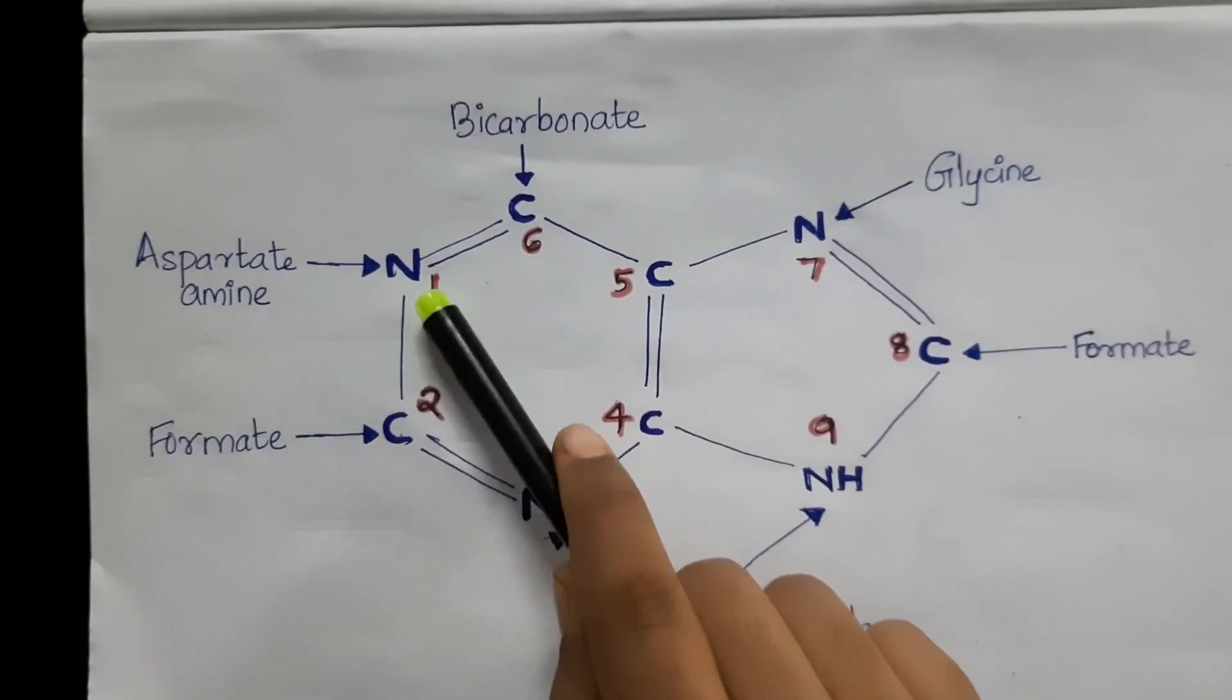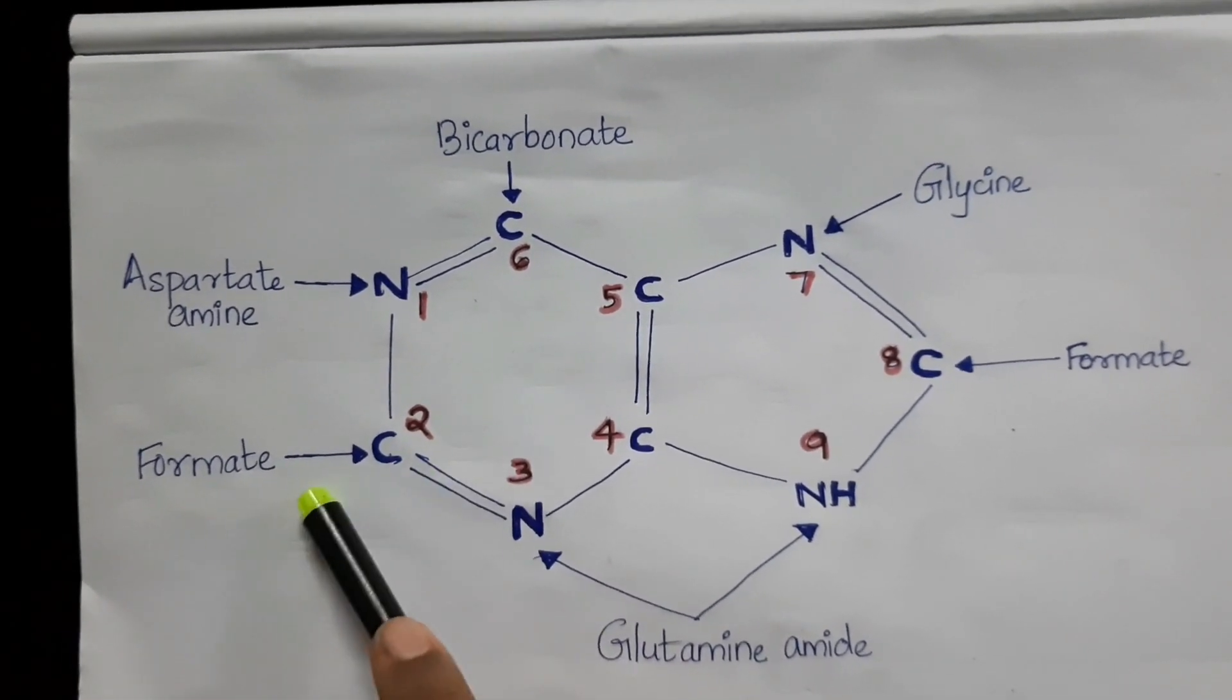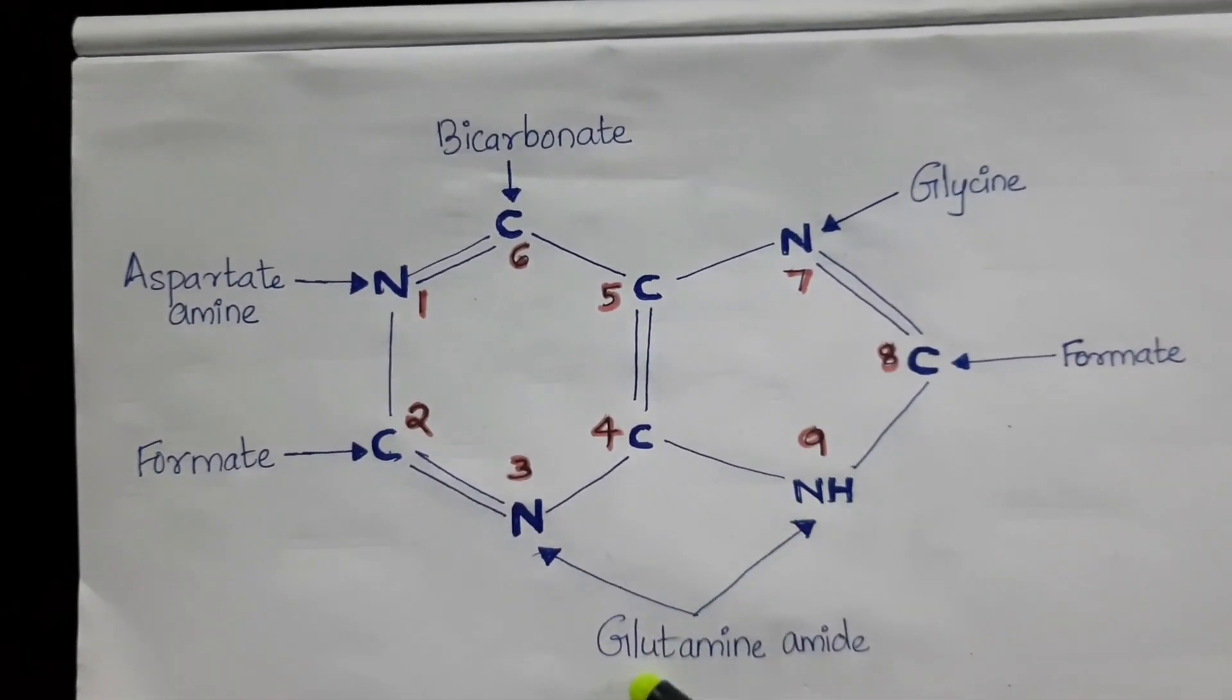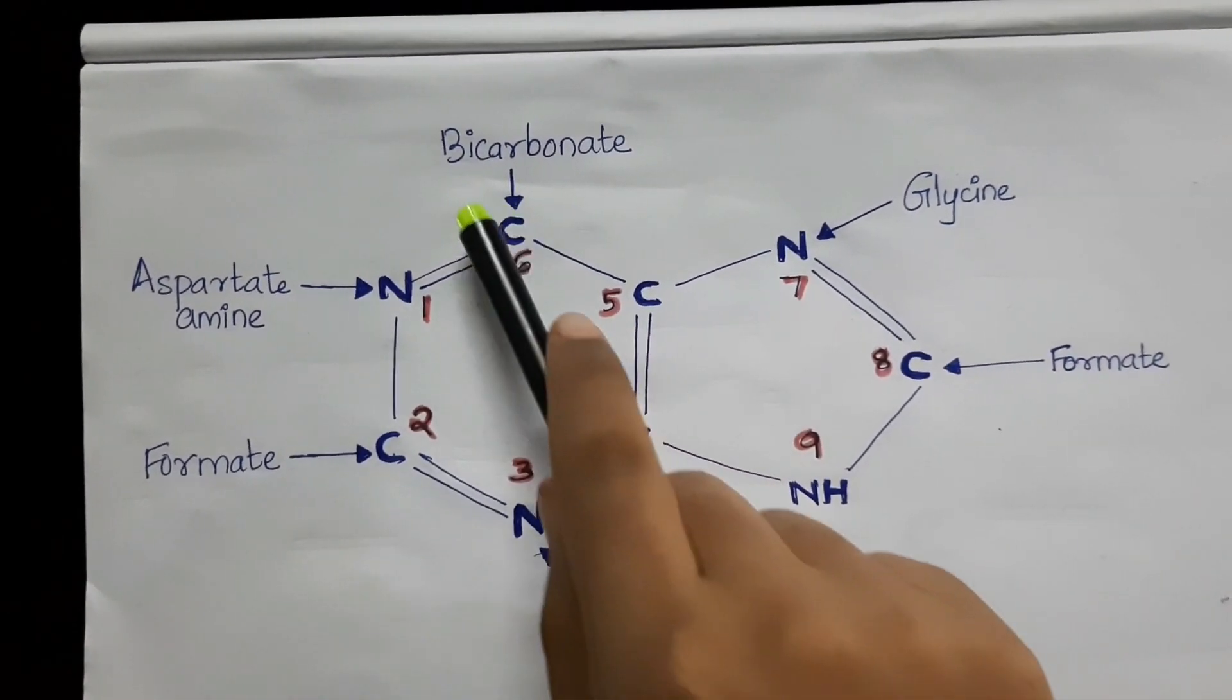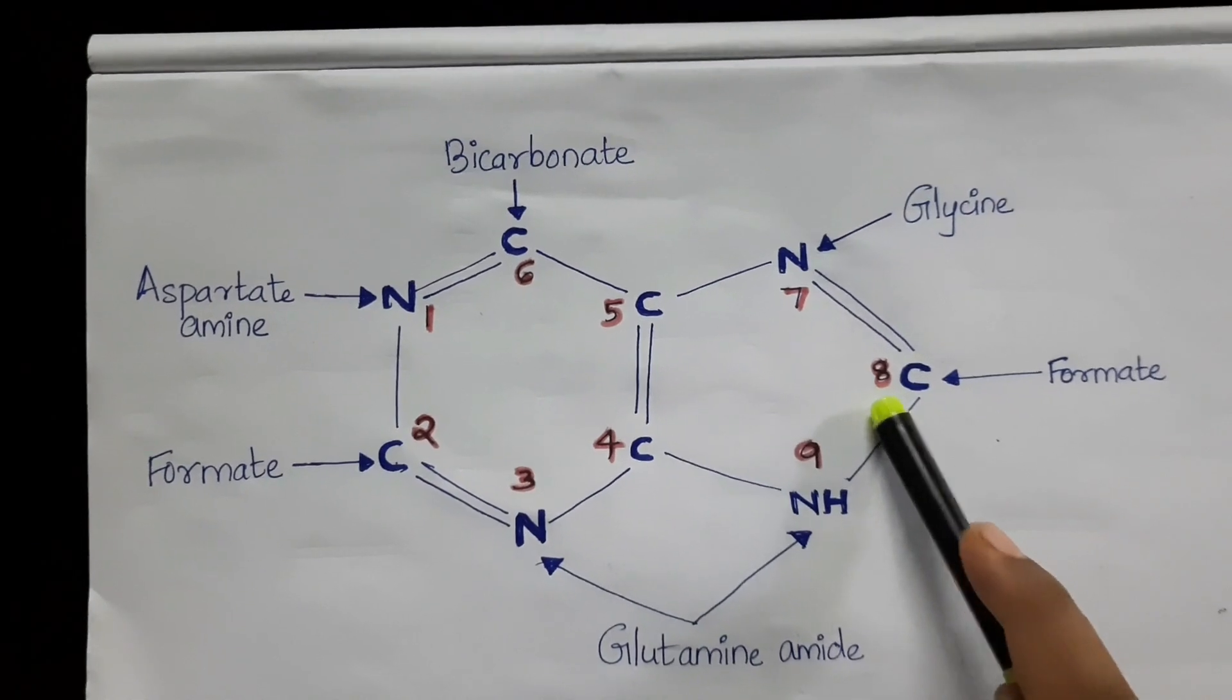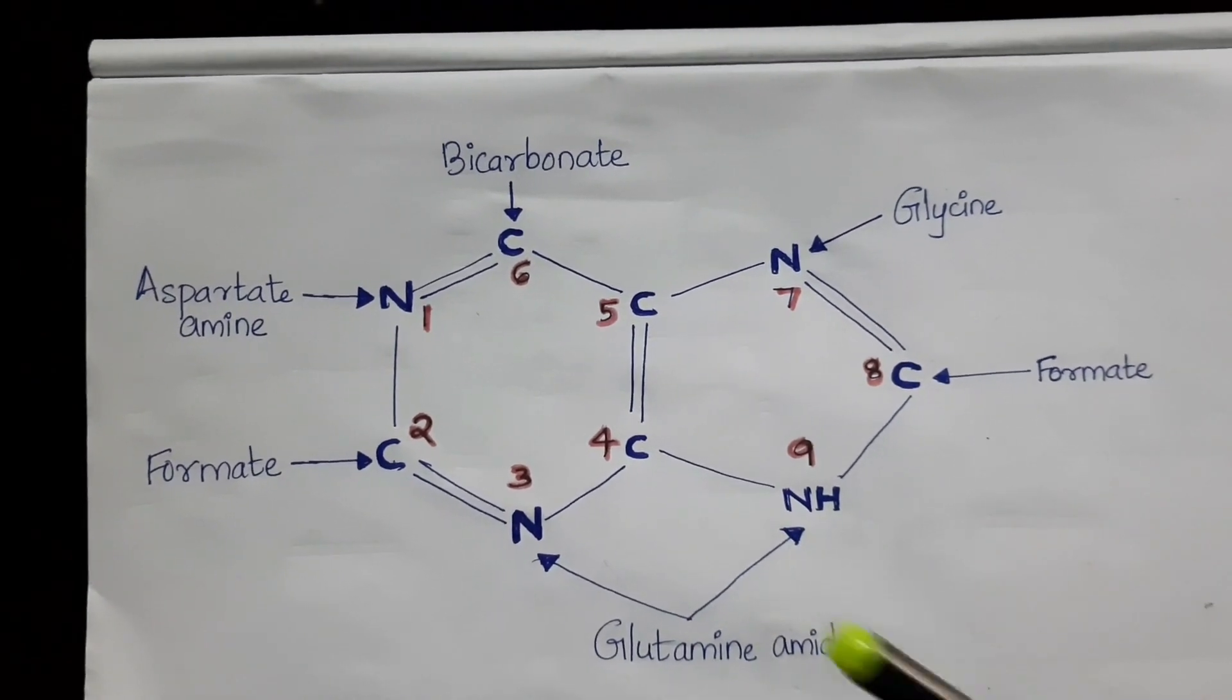Here, we can see that nitrogen in the first position is derived from aspartate amine. Carbon in the second position originates from formate. Nitrogen in the third and ninth positions is derived from glutamine amide. Carbon in the sixth position derives from bicarbonate ion. Nitrogen in the seventh position is from glycine and carbon in the eighth position is from formate. The detailed explanation of purine biosynthesis will be covered in a different lecture.